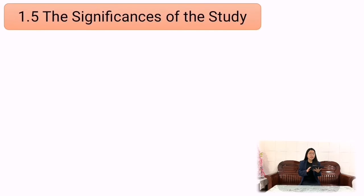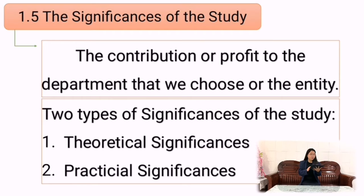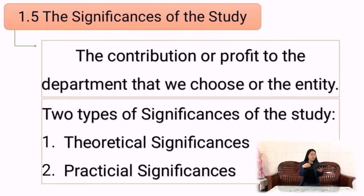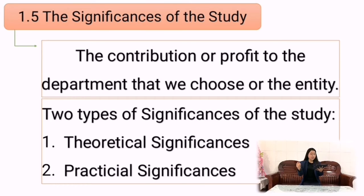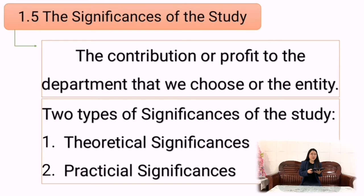The last is 1.5, the significance of the study. The significance of the study means the contribution or the benefit of the research to the department or entity chosen. There are two types of significance: the first is theoretical significance, and the second is practical significance.